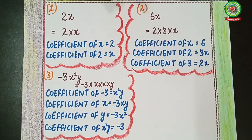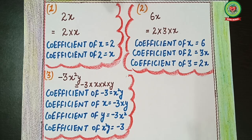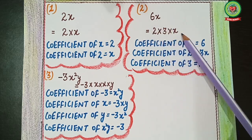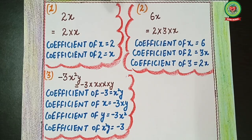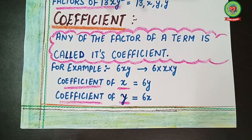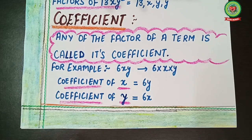By solving all these examples, we have learned that not only a numerical will be the coefficient of a given variable, but also a variable can be the coefficient of the numericals. Any of the factors of a term is called its coefficient. I hope you understood this concept and are now able to do the related homework that has been sent to you. Thank you.